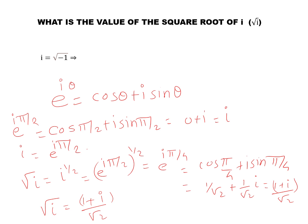To revise: i is equal to root of minus 1. What is the square root of i? For that, e raised to i theta is equal to cos theta plus i sin theta. When we take theta equal to pi by 2, it can be represented as i, meaning i is equal to e raised to i pi by 2.